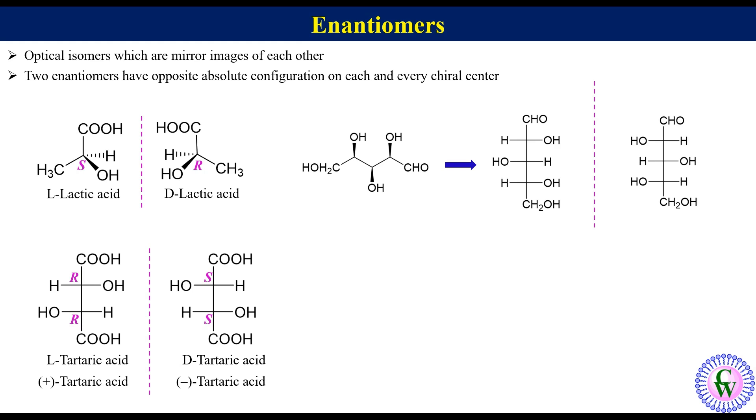In the second method, we will assign the configuration on each chiral center. The configurations in the left side compound are 2R, 3S, 4R while in the right side compound 2S, 3R, 4S. Here we can see that these two have opposite configurations on each chiral center so they are enantiomers.